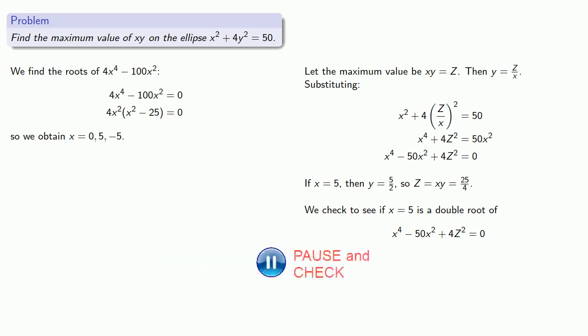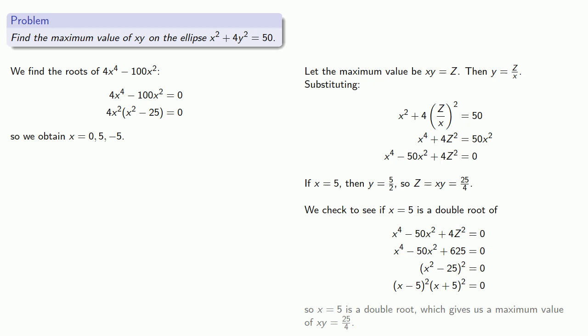And again we want to check to see if x equals 5 is a double root of our equation. And we see that both x equals 5 and x equals negative 5 are double roots, and so these correspond to our maximum values.